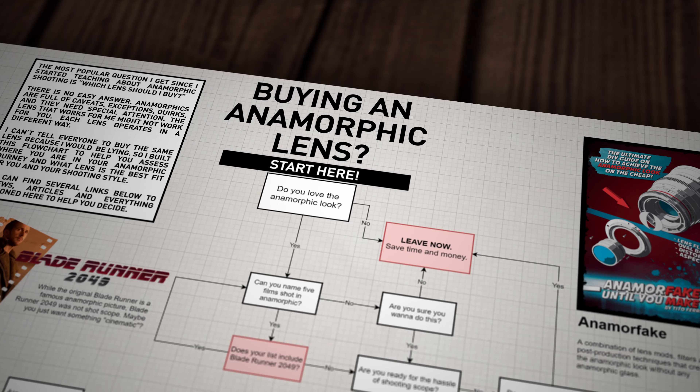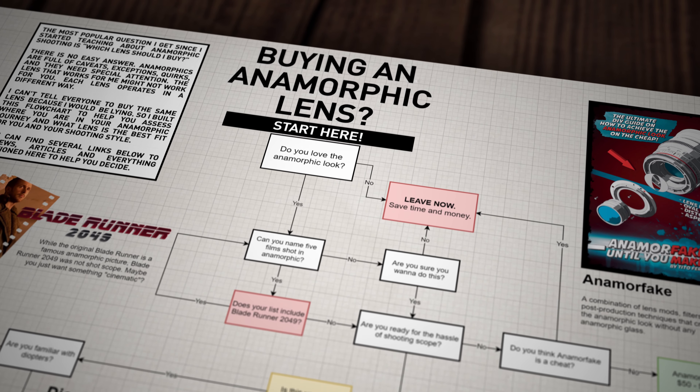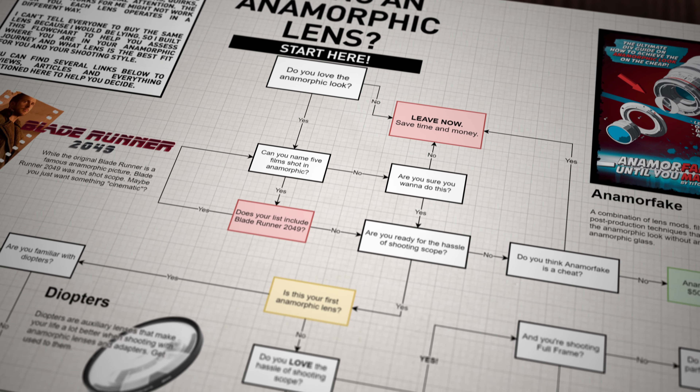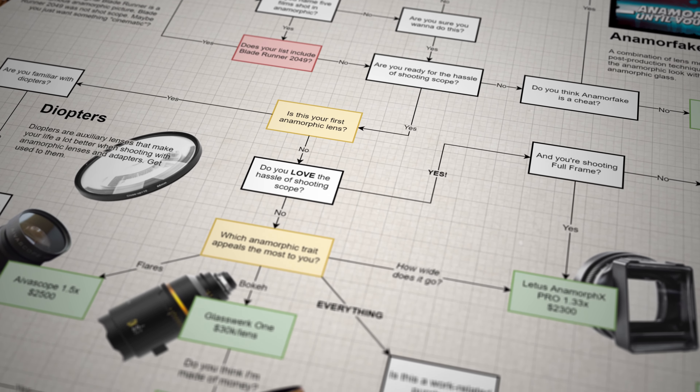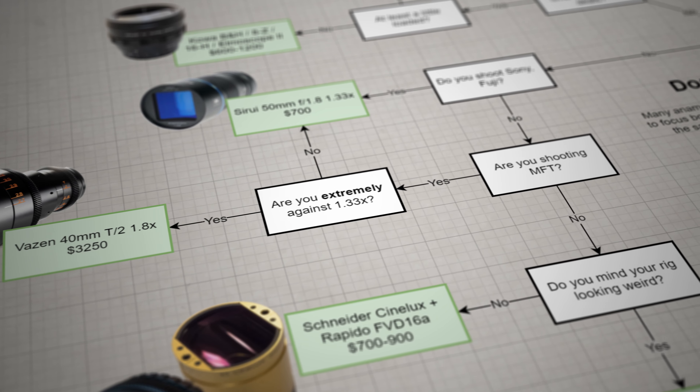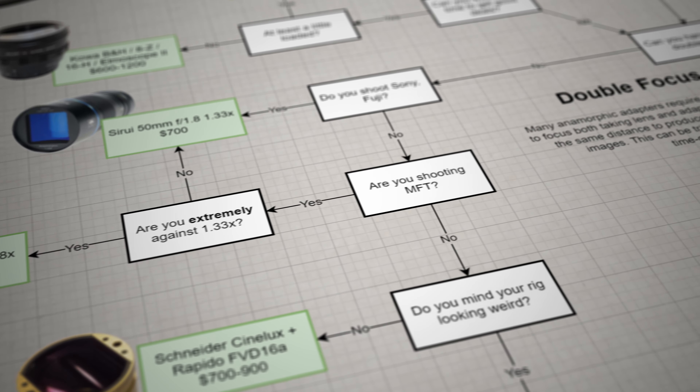Giving advice on which lens to buy is a tricky path to tread, so I started organizing my ideas into a flow chart. The thing quickly grew out of proportion and I saw myself including a lot of pathways and options for not only buying your first lens but any lens at any point in your anamorphic journey. As any advice you see on the internet, this is not the ultimate answer for a perfect lens but it tries to take you as far as possible down your own path.